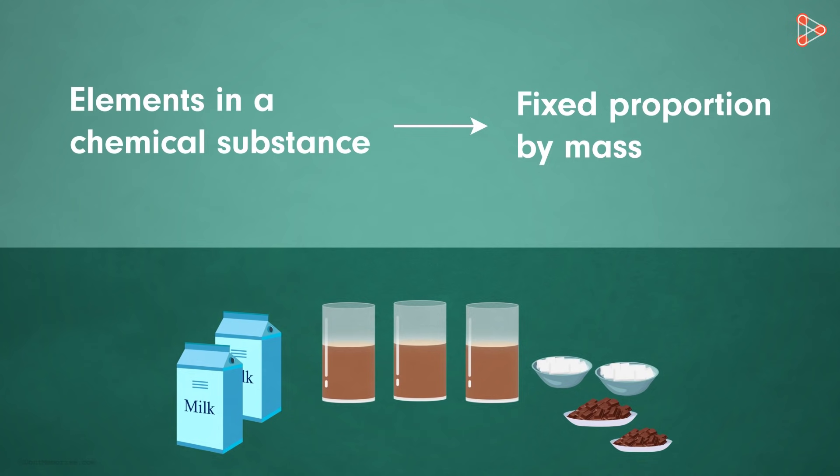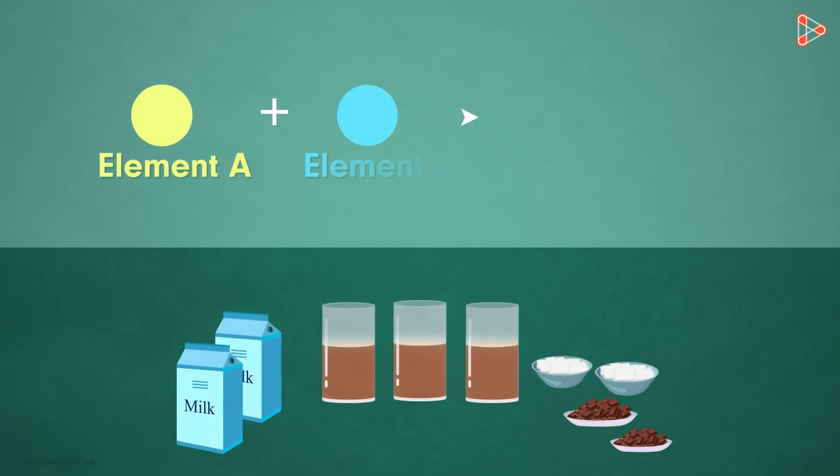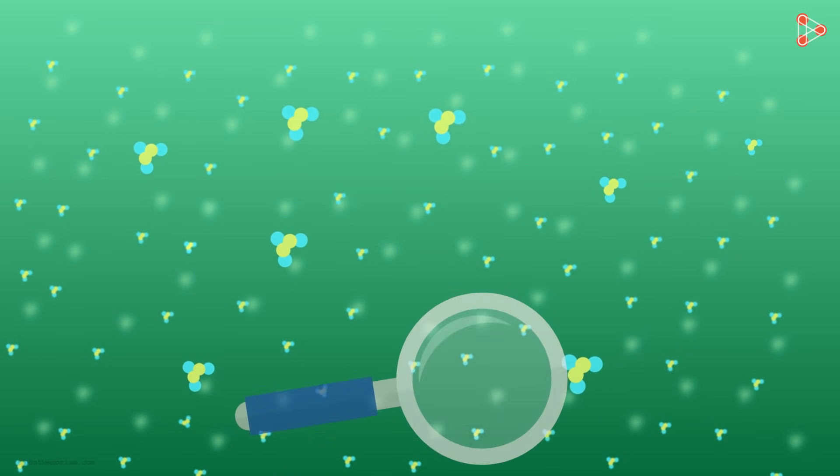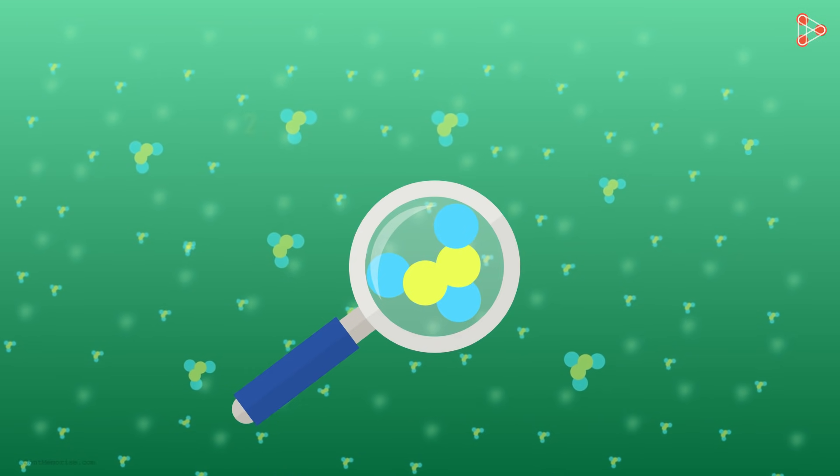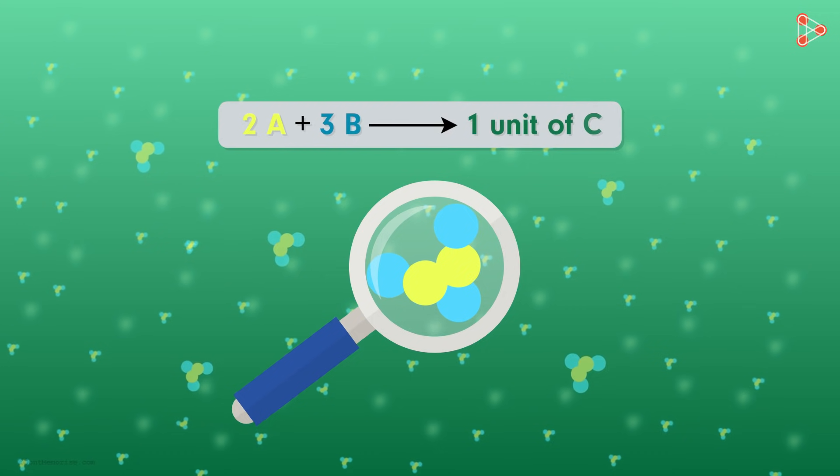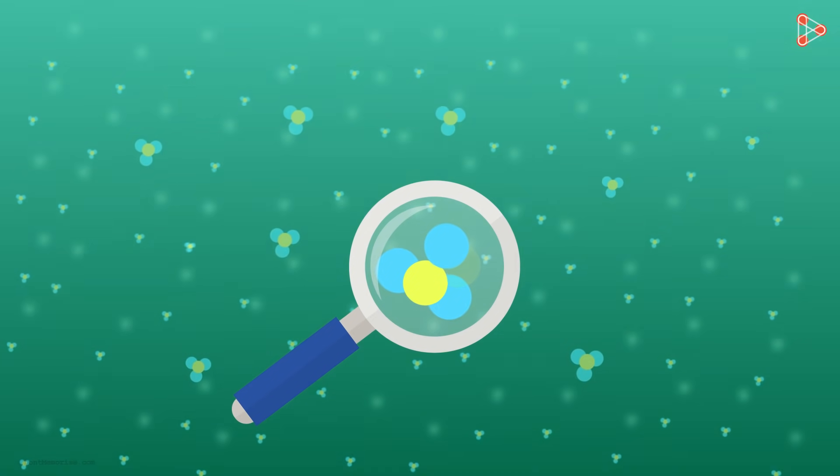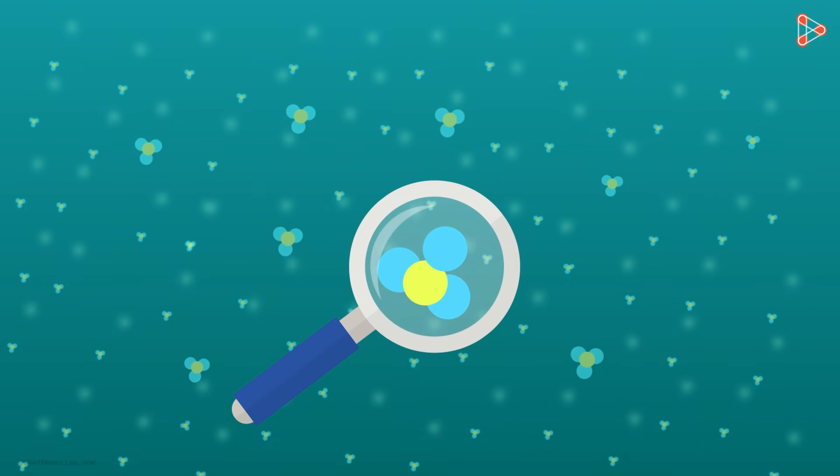So let us take the example of elements A and B giving us the compound C. Now if we observe just one single unit of the compound C, then we can notice that it has two atoms of element A and three atoms of element B. Is it true for all the units making up the compound C? Yes, it means that even if one atom from any of these units is removed or added, then it can no longer be called compound C. It will change to something different.